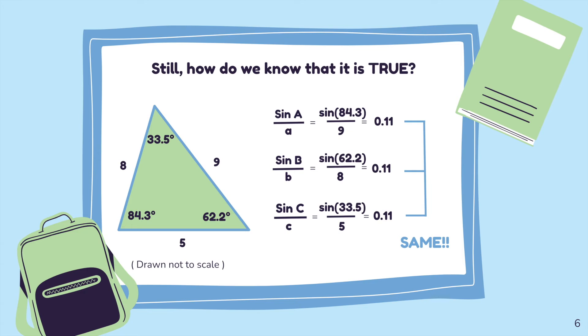But still, how do we know that this is true? For example, in the figure, let 84.3 as angle A, 62.2 as angle B, and 33.5 as angle C.